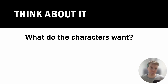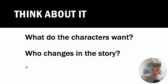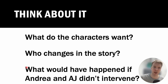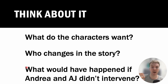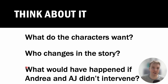Here are some things to think about: What do the characters want? Who changes in the story — who starts doing one thing and then ends up doing another? And what would have happened if Andrea and AJ didn't intervene? You can use your imagination. Think: what if Andrea and AJ didn't confront Mr. Klutz and allowed him to bungee jump off the top of the school? What would have happened? Those are the things to think about. I look forward to hearing your answers, and I'll see you next time.